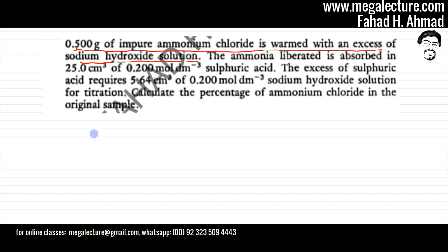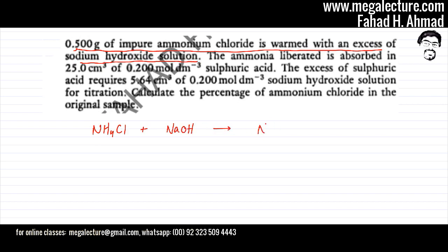Ammonium chloride: ammonium is NH4⁺, chloride is Cl⁻. So ammonium chloride is reacted with an excess of NaOH. The salt produced is NaCl, and there's going to be water, and ammonia gas is going to be released. So that's your balanced equation.